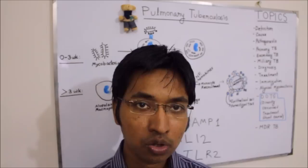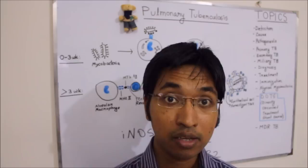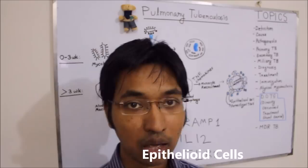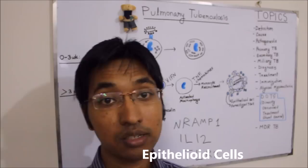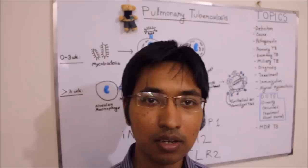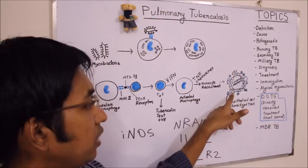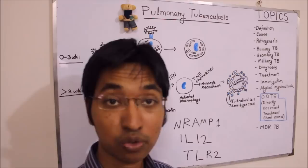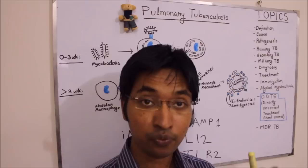Once macrophages are activated, they will also convert themselves into epithelioid cells. Epithelioid cells have a slipper-like nucleus and are modified macrophages. On the right side of the board you can see I have drawn some epithelioid cells. They derive from activated macrophages, and sometimes some epithelioid cells will fuse and form giant cells.